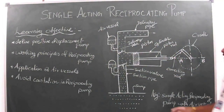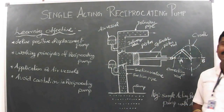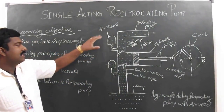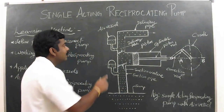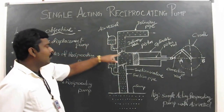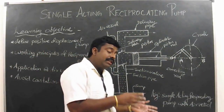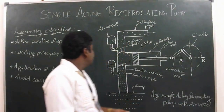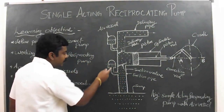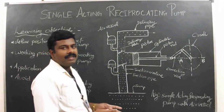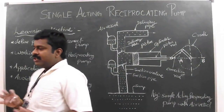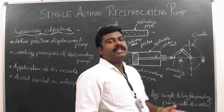Two air vessels are used in this pump. An air vessel is a closed chamber containing compressed air at the top and liquid at the bottom. The base of the chamber is open so that liquid can enter or leave. When liquid enters the chamber, the air is compressed; when liquid leaves, the air expands. The application of air vessels in the reciprocating pump is to obtain a continuous flow of liquid at a uniform rate.